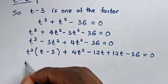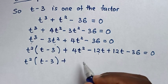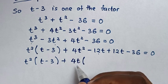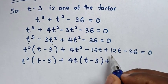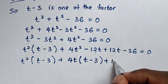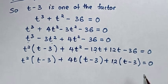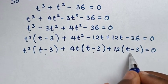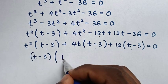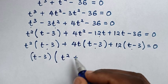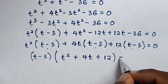Then in the next step, t square is common from the first two terms, so we take t square out of bracket: t square bracket t minus 3 bracket. Then 4t is common from the next two terms, so we take 4t out: 4t bracket t minus 3 bracket. Then 12 is common from the remaining terms: 12 bracket t minus 3 bracket is equal to 0. Then t minus 3 is common, so we take t minus 3 out: t minus 3 bracket t square plus 4t plus 12 bracket is equal to 0.